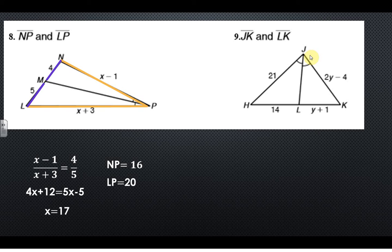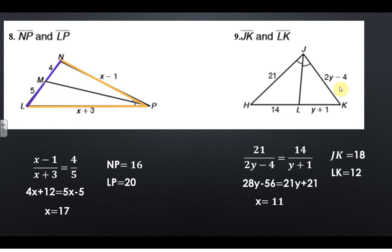Over here again, 21 and 2y minus 4 are the rays, and then 14 and y plus 1 are the sides across. Cross multiply, solve, substitute your values in.